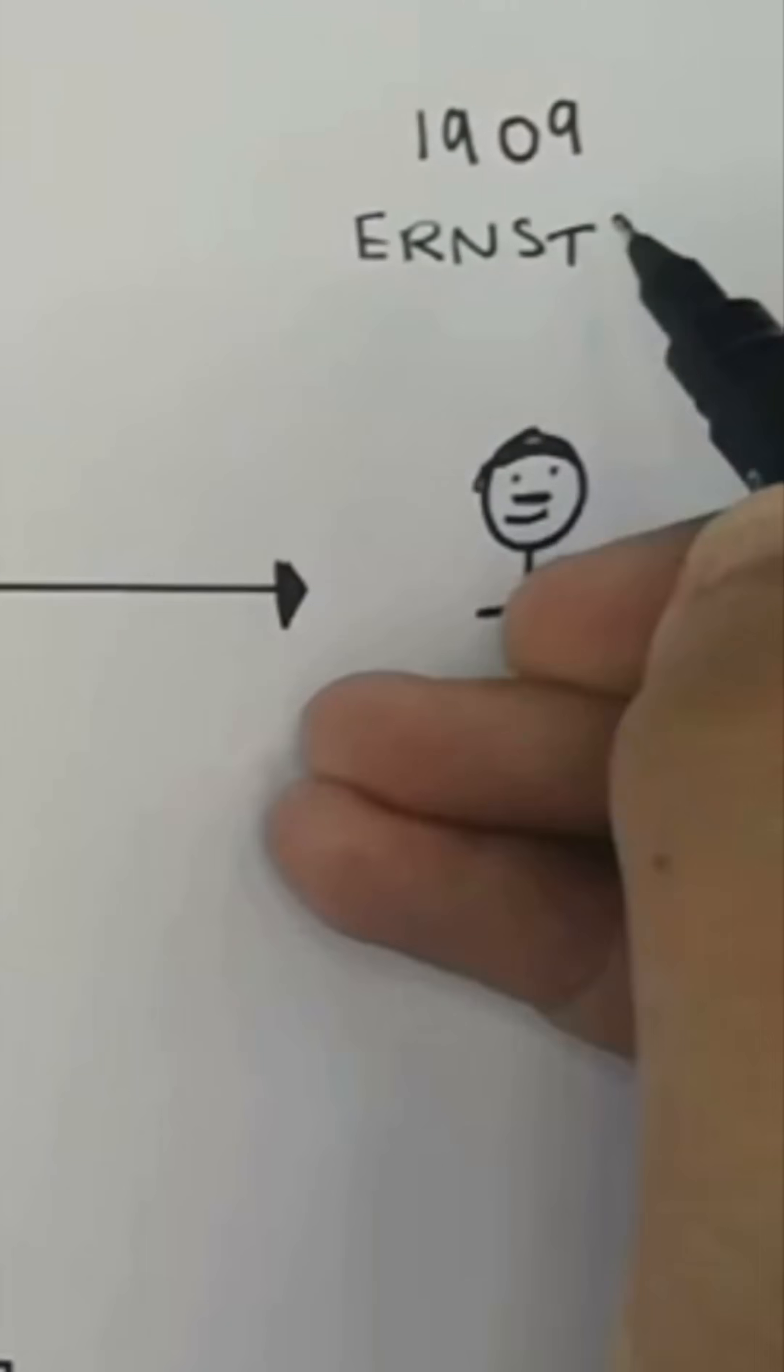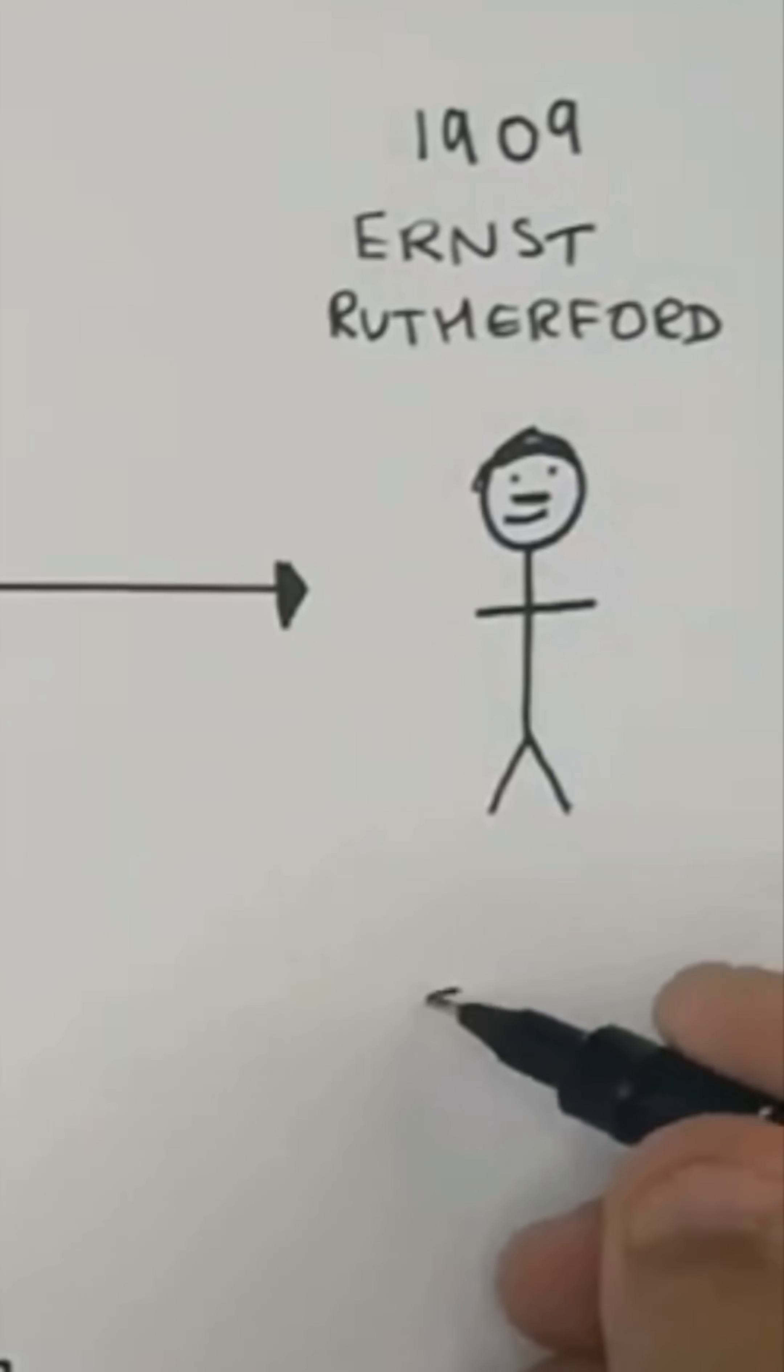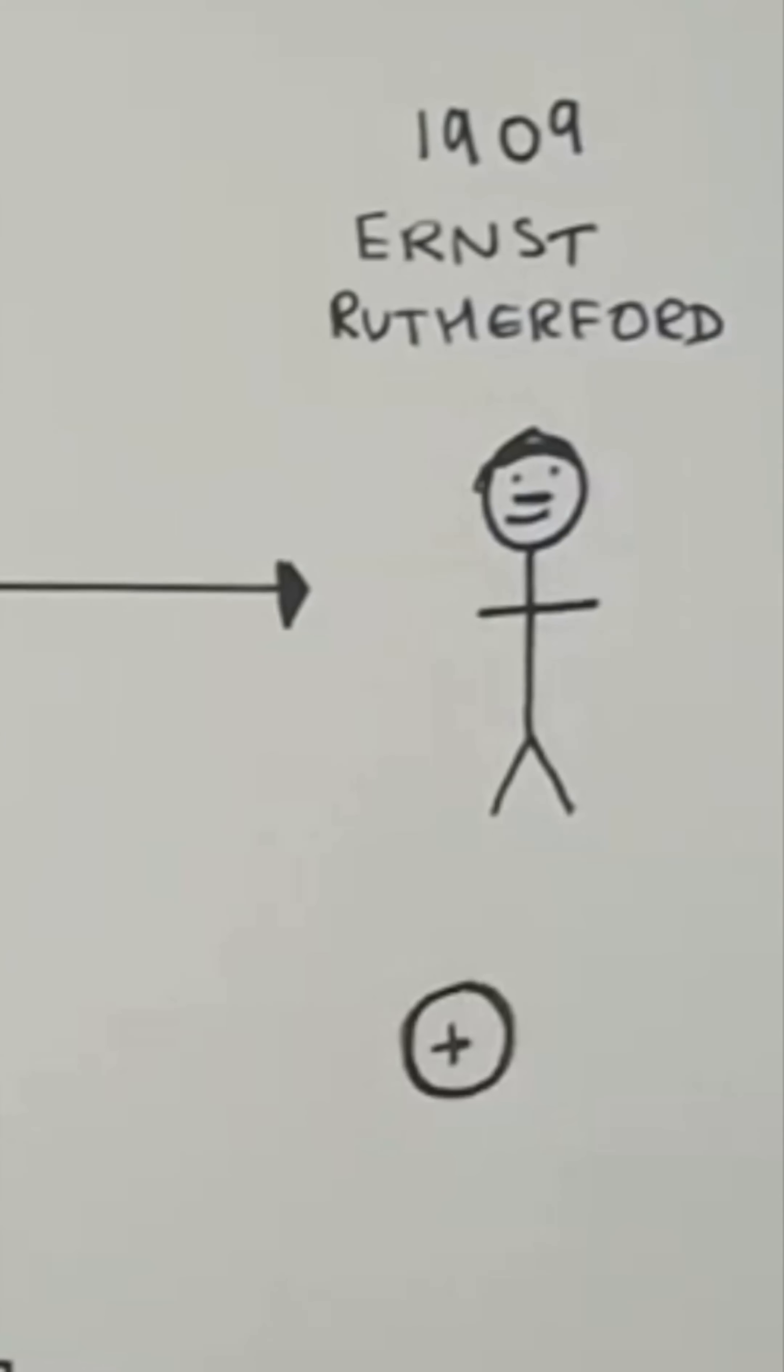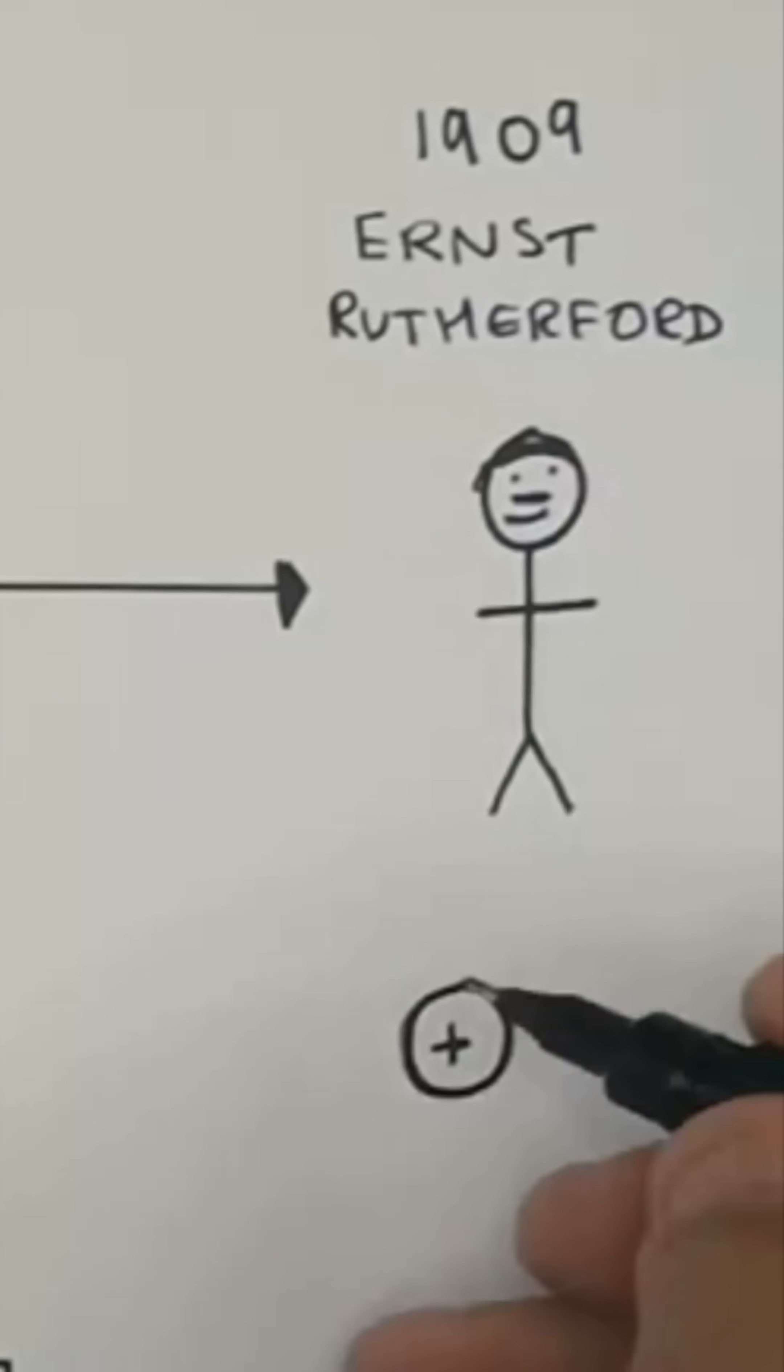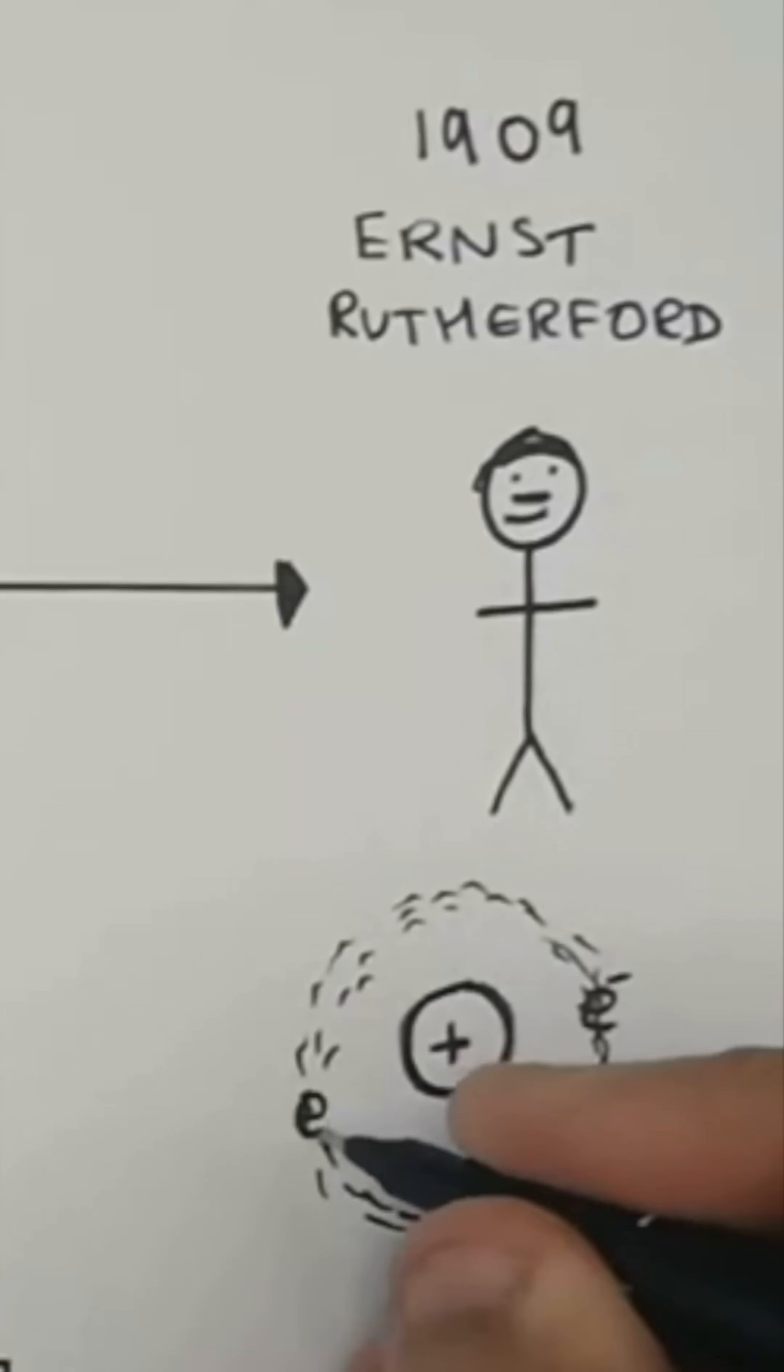This is Ernst Rutherford. And in 1909, he dismissed the idea of the plum pudding model with the nuclear model, whereby there was a central nucleus which was positively charged, and there was a sphere of electrons or negative charge surrounding this positive nucleus. That was Ernst Rutherford in 1909.